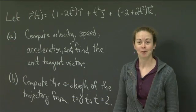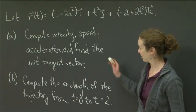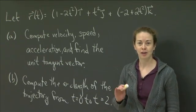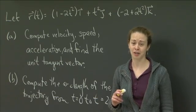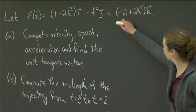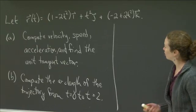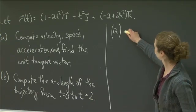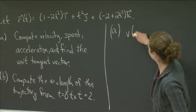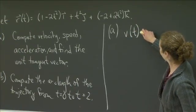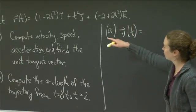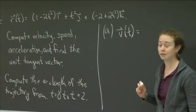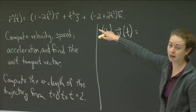Okay, welcome back. Hopefully you felt comfortable with answering these questions. So now I will answer them and you can compare your answers with mine. So let me start off with part a. Part a, the first thing we're going to do is find the velocity. So velocity, really all we need to do is take the derivative of the position vector with respect to t, so I'm just going to take r prime of t.